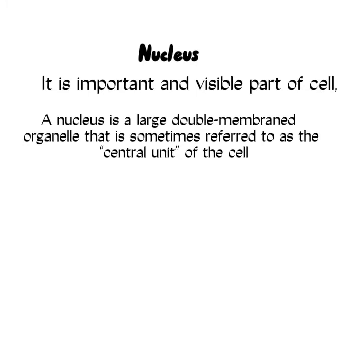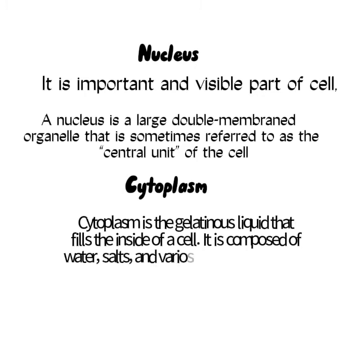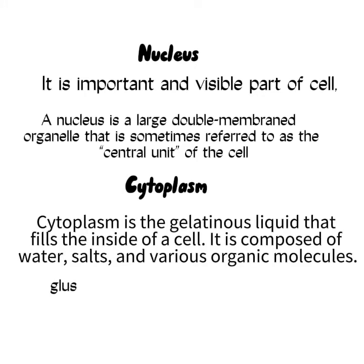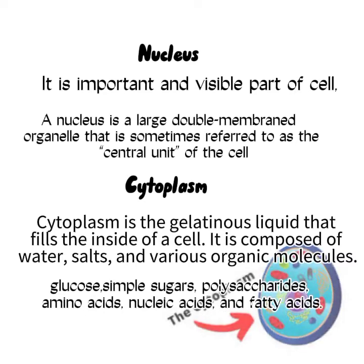Cytoplasm. Cytoplasm is the gelatinous liquid that fills the inside of a cell. It is composed of water, salts, and various organic molecules, for example sugars, polysaccharides, amino acids, nucleic acids, and fatty acids, as well as ions such as calcium, potassium, and sodium.